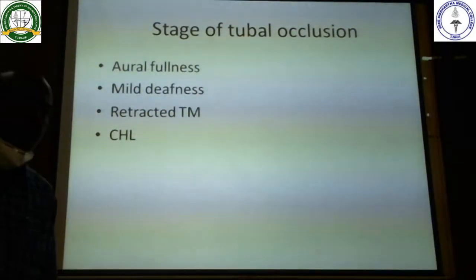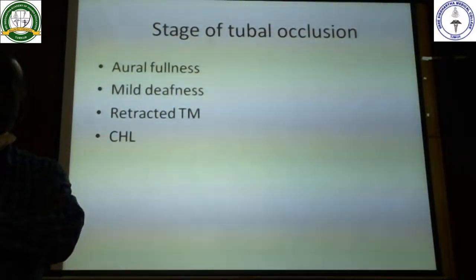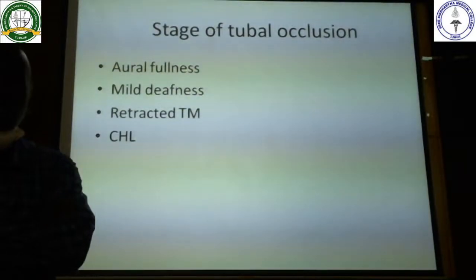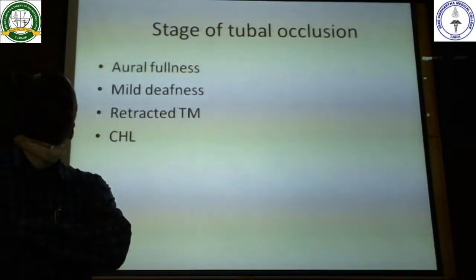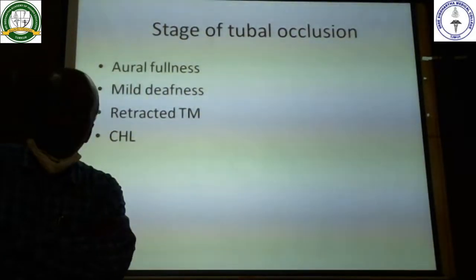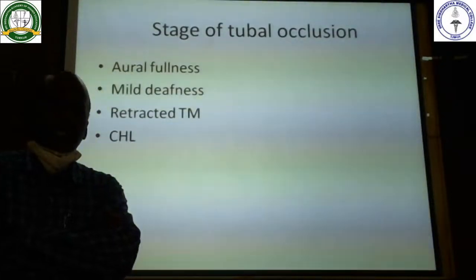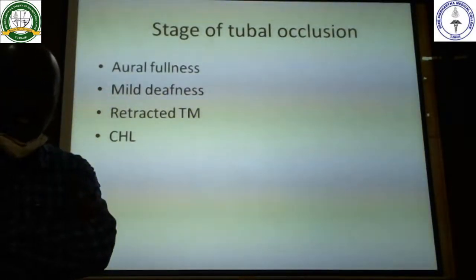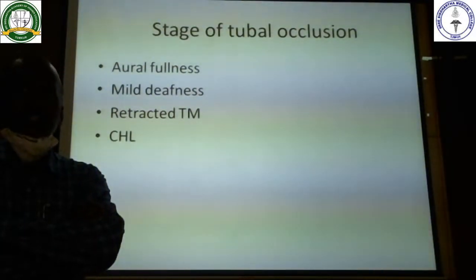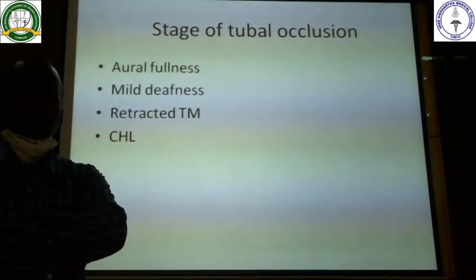Regarding the stages of acute otitis media, there are four stages based on signs and symptoms: Stage 1 — Stage of Tubal Occlusion; Stage 2 — Stage of Congestion; Stage 3 — Stage of Pre-suppuration; Stage 4 — Stage of Resolution or Complication. In Stage 1, as the name suggests, the Eustachian tube becomes blocked, creating a negative pressure in the ear, which manifests as ear fullness.